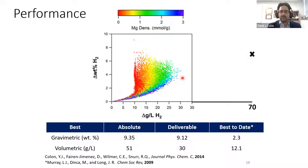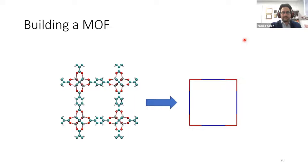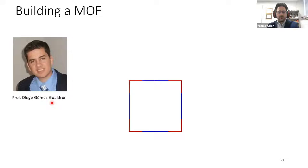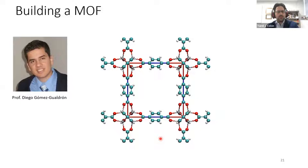We started thinking we need a different approach to how we build these materials. There's an underlying net associated with MOFs. With Professor Diego Gomez (now at Colorado School of Mines, then a postdoc), we took a different approach: we start with the net and map the structure into it. Talking about these nets — if you follow any straight line and change directions, those points where you change directions are nodes, and what connects the nodes are called edges.